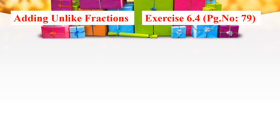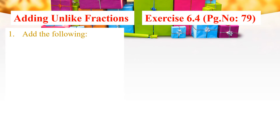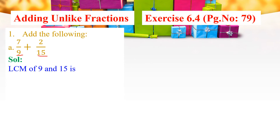The next topic is adding unlike fractions. Exercise 6.4, page number 79. The first question: add 7 by 9 plus 2 by 15. Here, both the denominators are different. Therefore, both terms are unlike fractions. The first step is to find the LCM of the denominators, that is the LCM of 9 and 15.